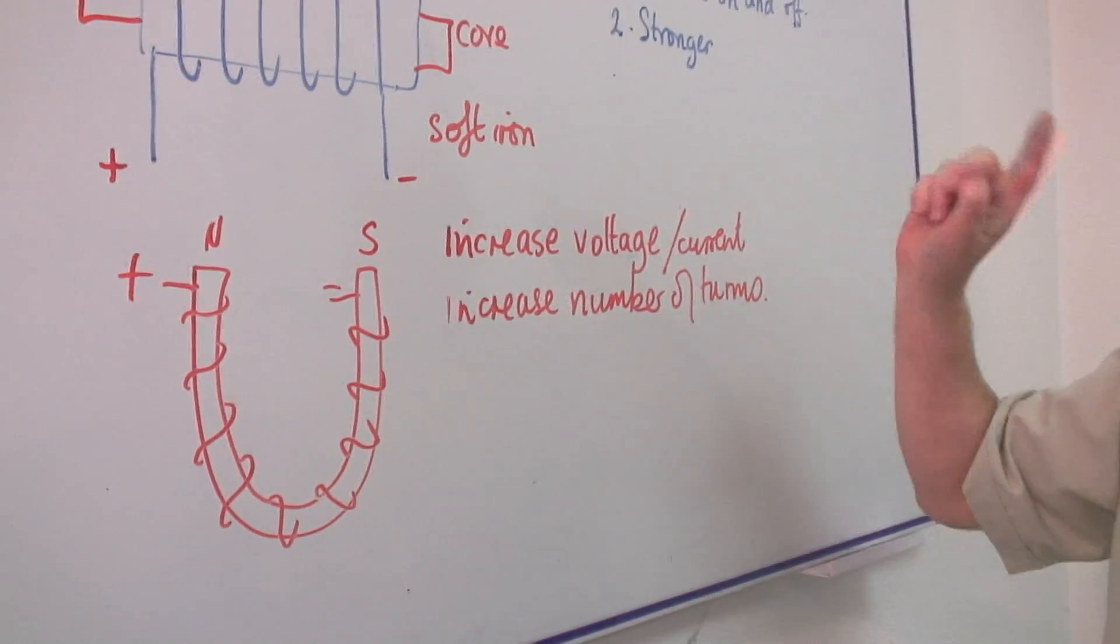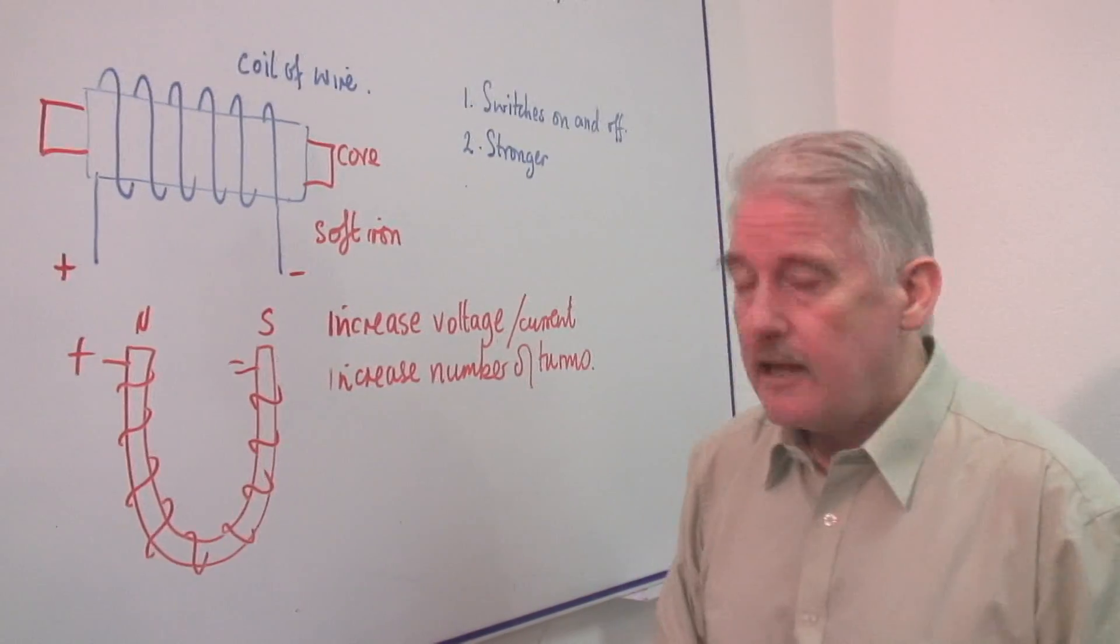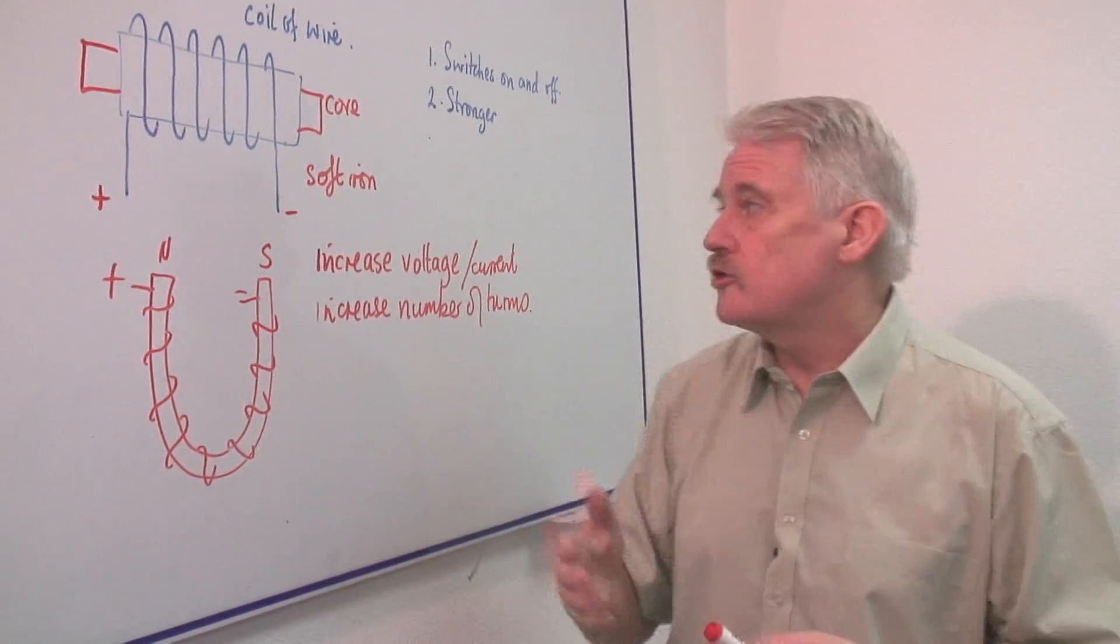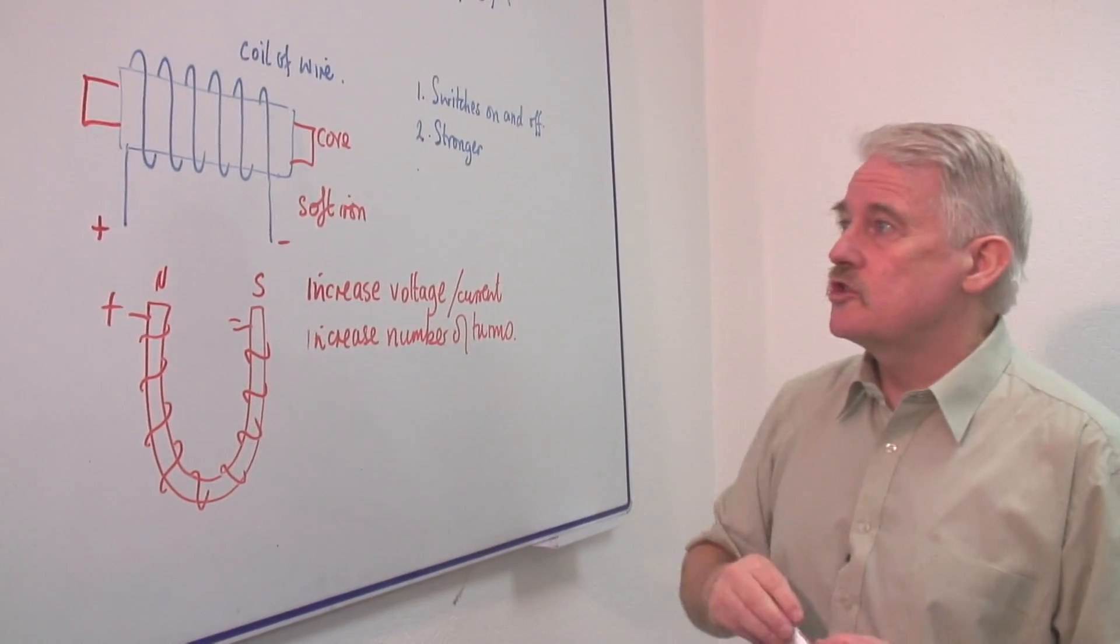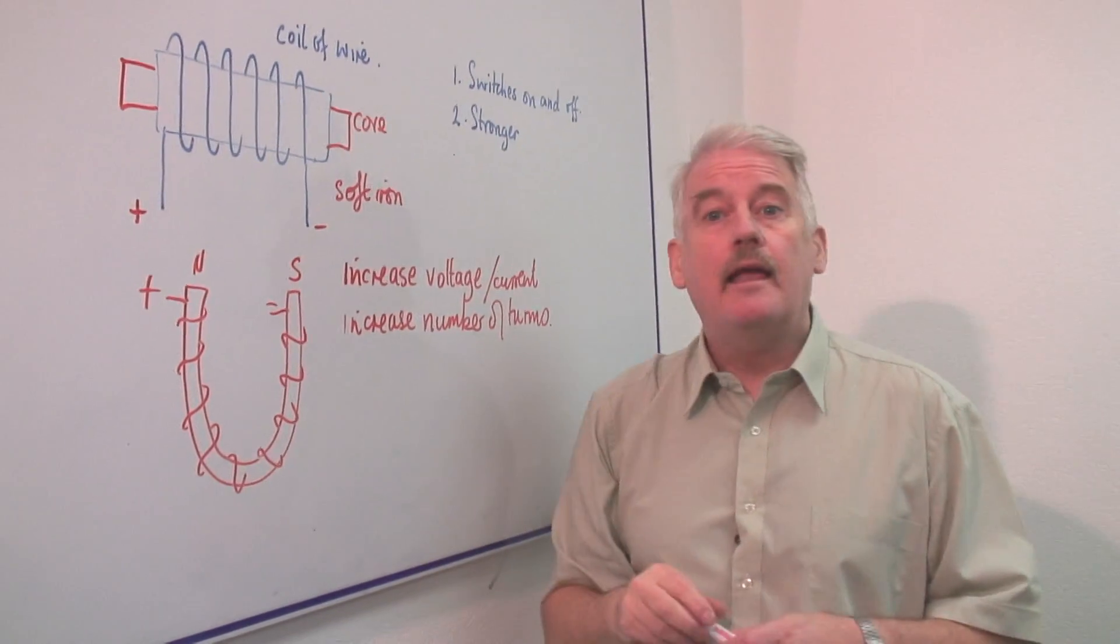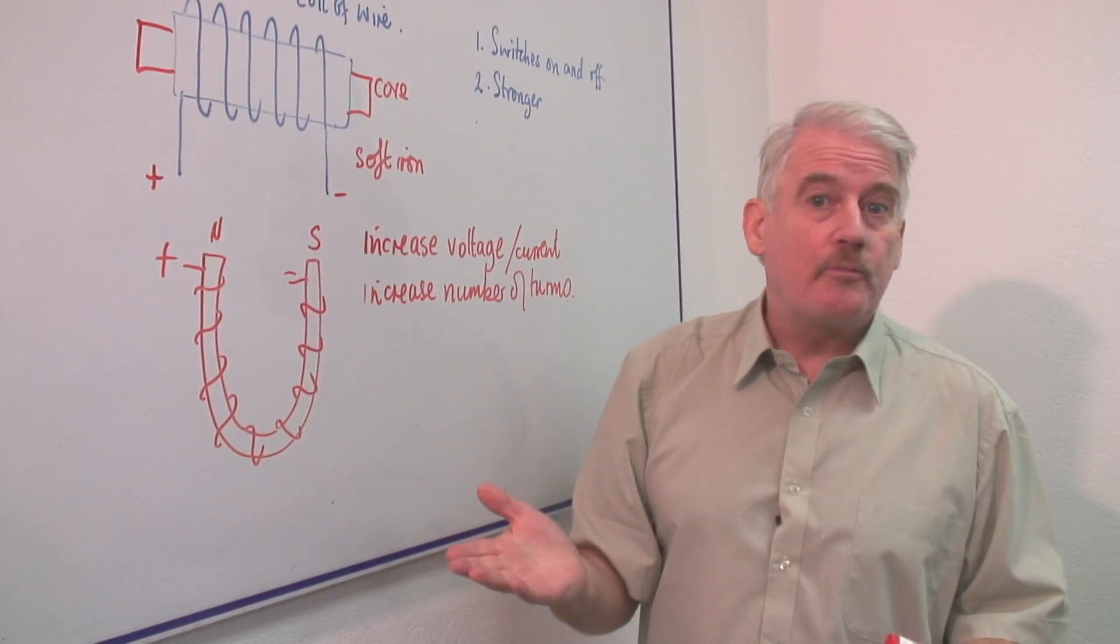And that's the main advantage of an electromagnet: that it can be stronger and it switches on and off. So that is basically how to make an electromagnet.